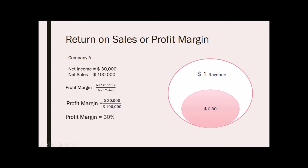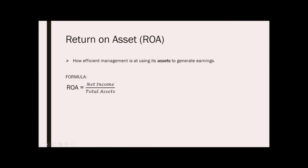Return on assets, or ROA, is an indicator of how profitable a company is relative to its total assets. ROA gives an idea as to how efficient management is at using its assets to generate earnings, and gives investors an idea of how effectively the company is converting its investment into net income. By dividing net income over total assets, we get the ROA, which is displayed as a percentage.